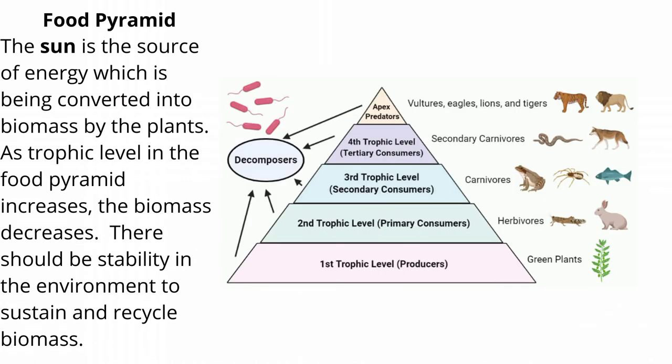The sun is the source of energy, which is being converted into biomass by the plants. As the trophic level in the food pyramid increases, the biomass decreases. There should be stability in the environment to sustain and recycle biomass.